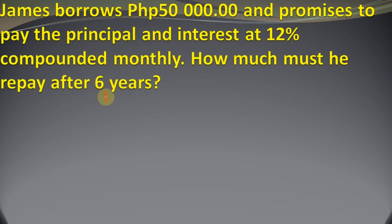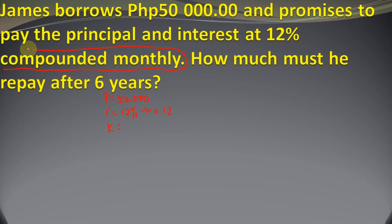The given values are: P equals 50,000; r is 12%, which converts to decimal as 0.12; k is 12 because it is compounded monthly; and T is 6 years. Now let's substitute these values into the formula.